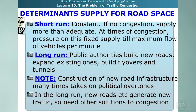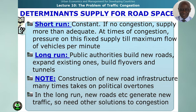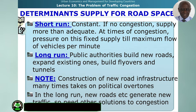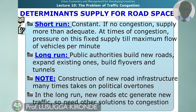Regarding supply of road space: in the short run, supply is constant, and if there is no congestion, the supply is more than adequate. At times of congestion, pressure builds on this fixed supply until the maximum flow of vehicles is reached. In the long run, public authorities build new roads, expand existing ones, and build flyovers and highways. However, construction of new road infrastructure often takes on political overtones, and in the long run new roads generate new traffic. So you need solutions beyond simply expanding roads.